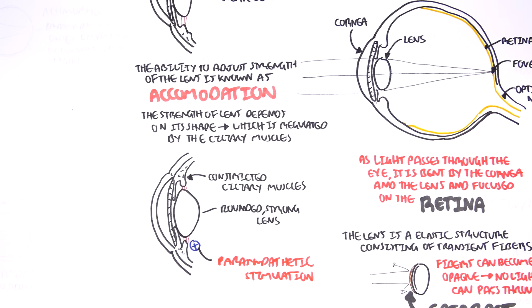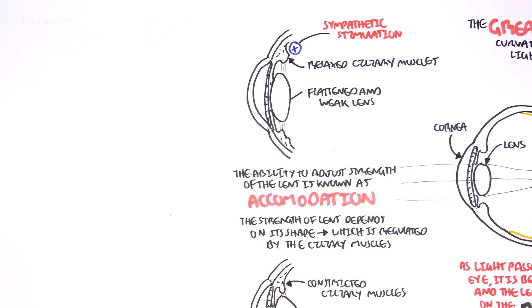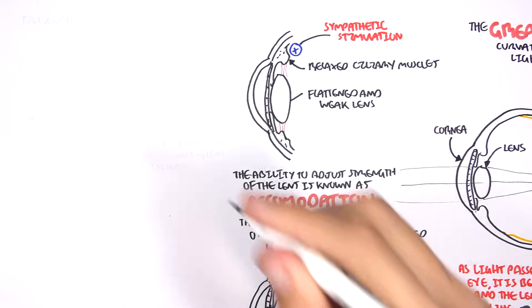These changes that the lens can perform by being rounded and stronger are part of accommodation. So how does accommodation work?